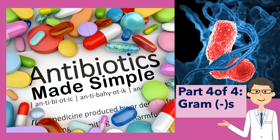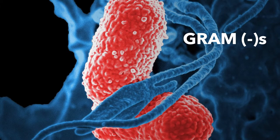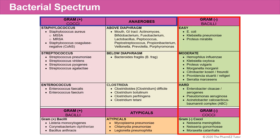We've now arrived at part 4 of this four-part lecture series, and in this section we'll be talking about gram-negative organisms. Gram-negative bacilli represent the third group in the table of the bacterial spectrum. The gram-negative bacilli can be subdivided into three groups: the easy-to-hit, the moderate-to-hit, and the hard-to-hit gram-negatives.